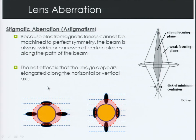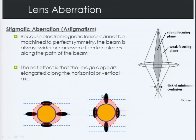Stigmatism is another type of aberration that occurs because the lenses are not machined to perfect symmetry, so the beam will always be wider or narrower at certain places. The net effect is that images will appear elongated — either in the horizontal or vertical direction. We use a stigmator lens or stigmator coil to produce a magnetic field in the correct places to squeeze the beam back to a spherical shape, giving us a more accurate depiction of our sample.